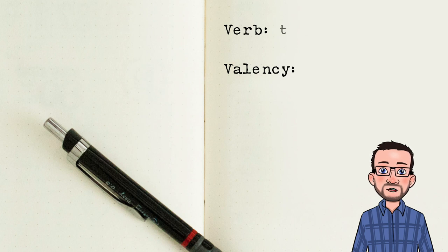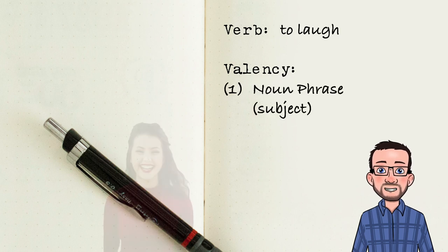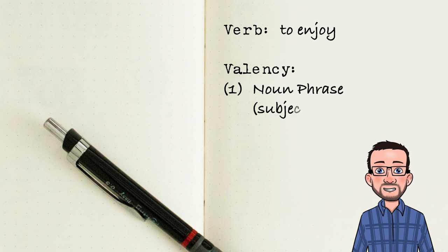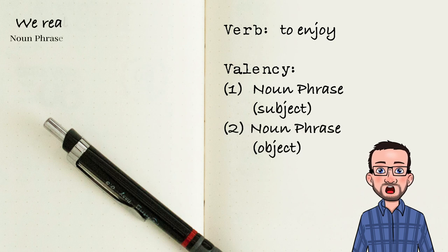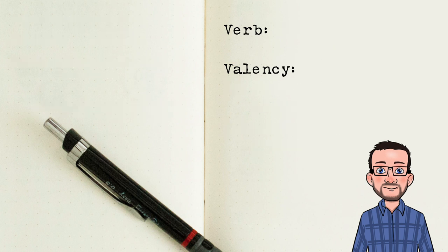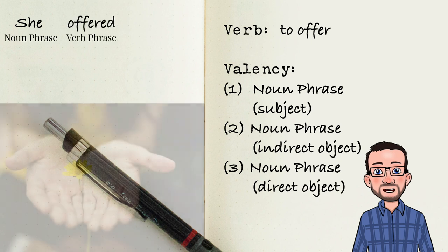A verb such as to laugh only has one element in its valency list, so it can combine with she to form sentences such as she laughed. English speakers would find it weird, however, if you would add another object to say things such as she laughed a smile. Verbs such as to enjoy need to combine with two arguments to form sentences such as we really enjoyed each other's company, and if you take away the second object and say we really enjoyed, English speakers will find that something is missing. Verbs such as to offer can take three arguments such as she offered me a yellow flower.